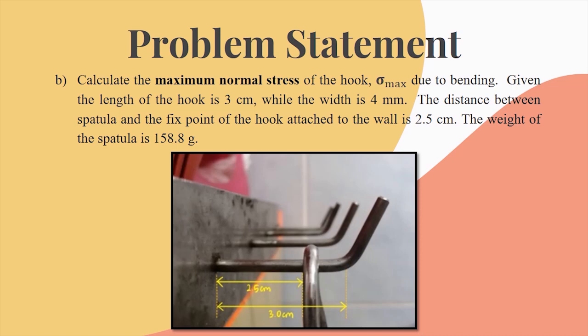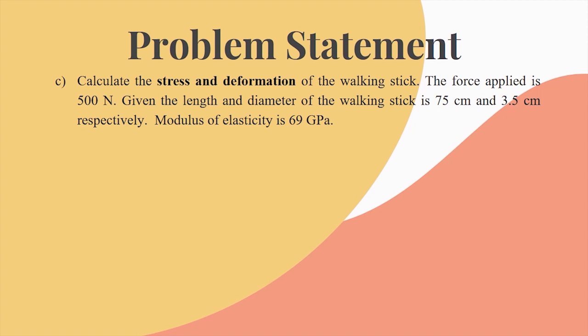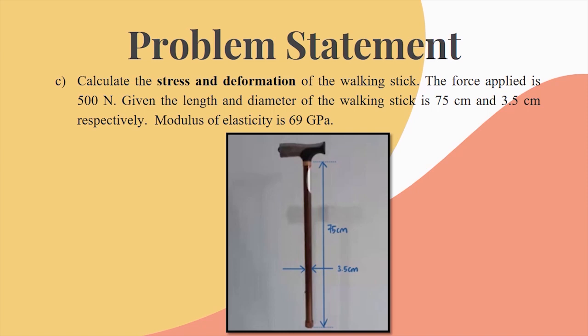When Timmy's grandfather was pressing down his walking stick, we can calculate the stress and deformation of the walking stick. The force applied by him is 500 newtons. Given that the length and the diameter of the walking stick is 75 cm and 3.5 cm respectively. Since his walking stick is made of aluminum, the modulus of elasticity is 69 gigapascals.